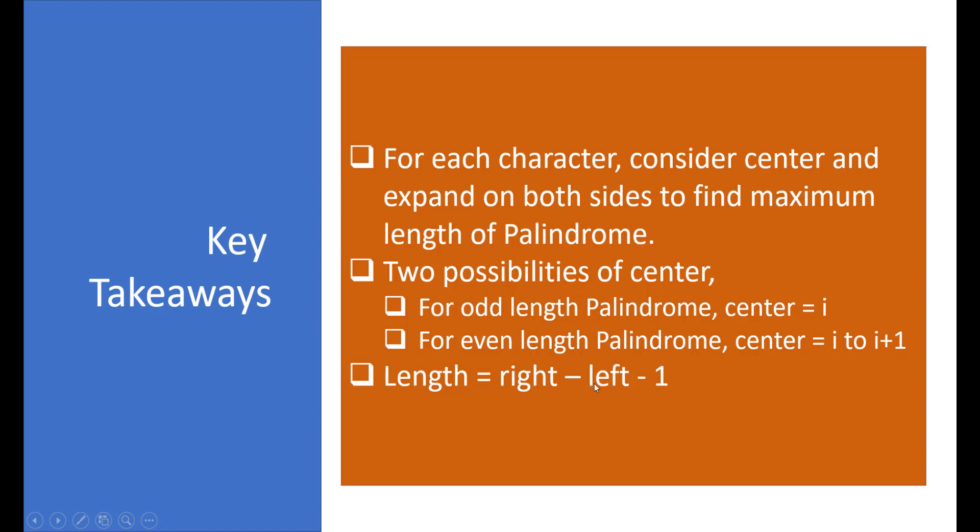Finally, the length would be right minus left minus 1. So you would need to iterate over the array and you need to find the palindrome for odd length and even length at each index by expanding on both the sides and then finding the length. If the length is maximum, you need to update the maximum length palindrome with the current one.